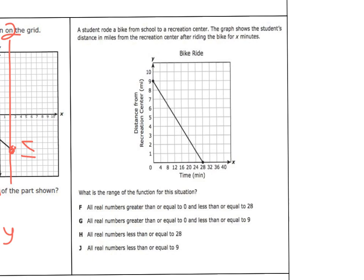Now we have a real world situation and it says a student rode a bike from a school to a recreation center. The graph shows the student's distance in miles from the recreation center after riding the bike for x minutes. What is the range of this situation? So remember range is y. If we look at our y-axis, we're going to go from lowest to highest. This goes from 0 to 9.